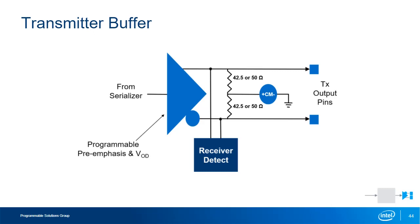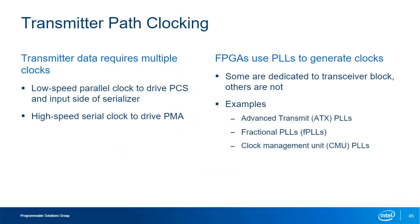When the transmitter goes into a low-power state, it can wake up the link by sending the appropriate signal to the receiver to confirm its presence. From the transmitter buffer, data can be driven across board traces, a backplane, or a cable, or through the Physical Medium Dependent or PMD layer which converts the signal to a form based on the transmission medium such as optical fiber. To drive the logic in the transmitter data path, multiple clocks are needed — a low-speed parallel clock for the PCS and parallel input side of the serializer, and a high-speed serial clock for the rest of the PMA. These blocks must be fully synchronous so as not to lose data during transmission.